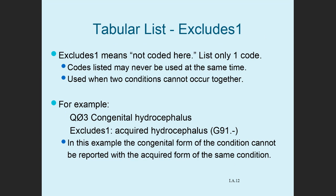Excludes 1 means 'not coded here.' Codes listed may never be used at the same time. For example, Q03, congenital hydrocephalus, has an excludes 1 note for acquired hydrocephalus with the code G91. It makes sense — a patient can't have both congenital and acquired hydrocephalus at the same time. So you report only one code: either Q03 or something from G91.